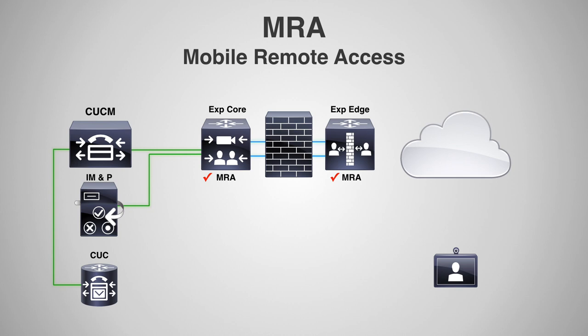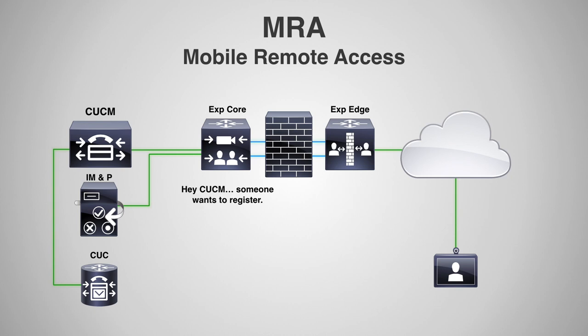So what happens when this endpoint tries to register? The idea is to provide a way for the endpoint to register to the CCM. When it tries to register, the Expressway Edge says to the Expressway Core, 'someone's trying to register.' And then the Expressway Core says to the CCM, 'someone's trying to register.' And then the CCM says to the Core, 'okay, let them register.'